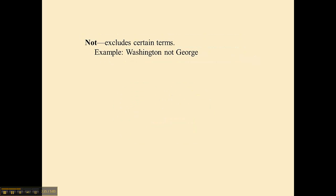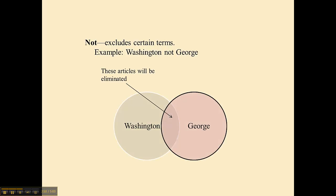The last one, NOT, is specifically designed to exclude certain terms from your search. For example, if I wanted articles about Washington but not the articles about George Washington, I can do 'Washington NOT George.' That way it will find the articles about Washington and the articles about George, and the ones that overlap — the ones that contain both — are going to be excluded and eliminated from the search. I'll only get the articles that mention Washington, nothing about George.